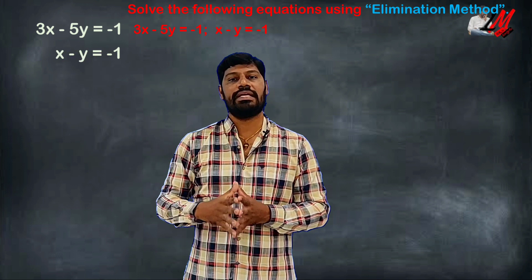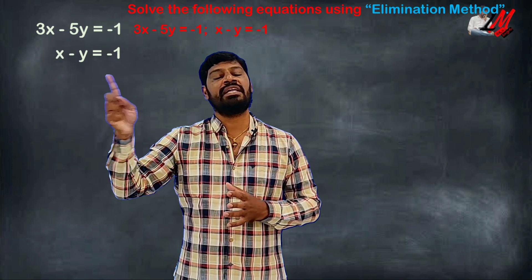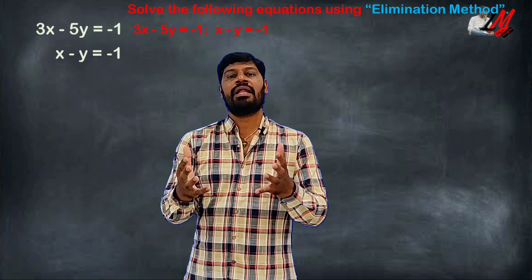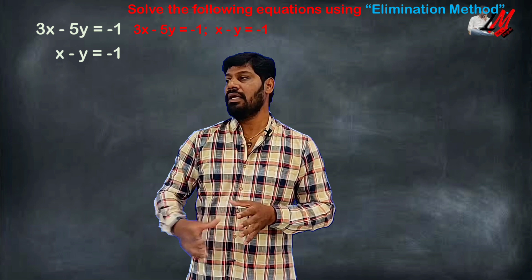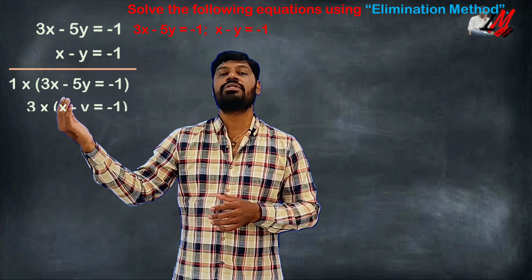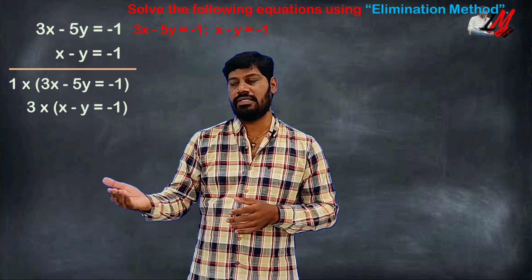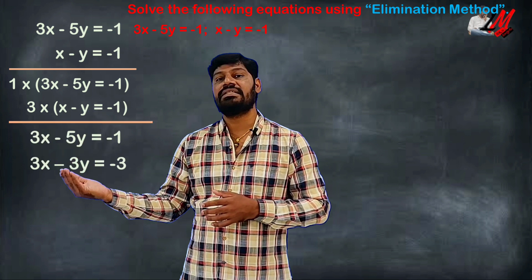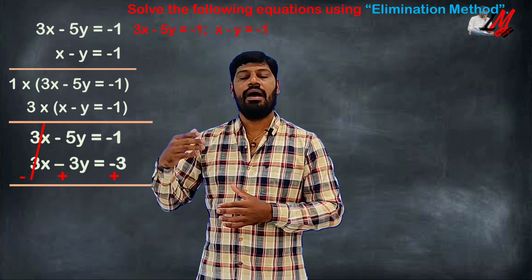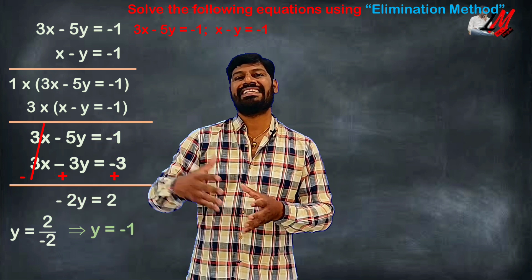The coefficient of x in the first equation is 3. So we multiply the second equation by 3. The coefficient in the second equation is 1, so 1 times (3x minus 5y equals minus 1) and 3 times (x minus y equals minus 1). Multiplying gives 3x and 3x which are the same, so we eliminate by subtraction. We get minus 2y equals 2, so y equals minus 1.